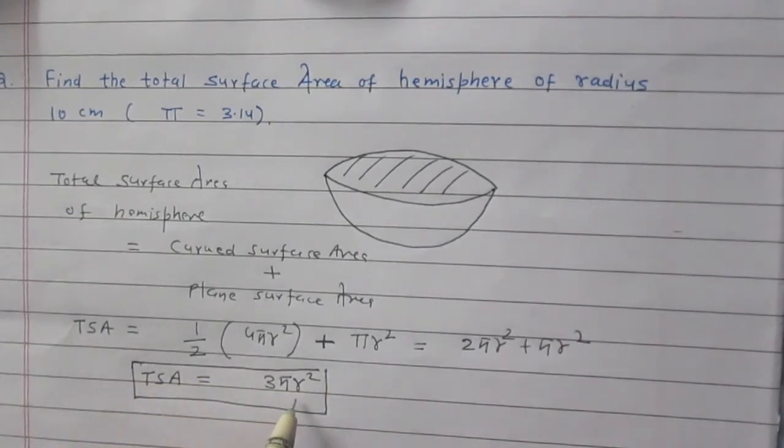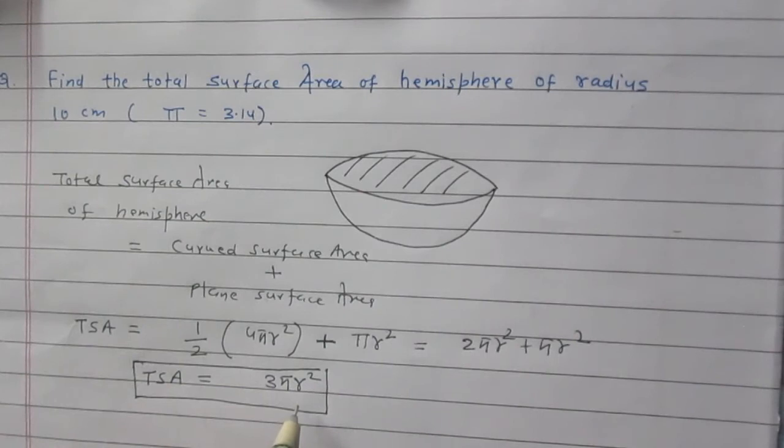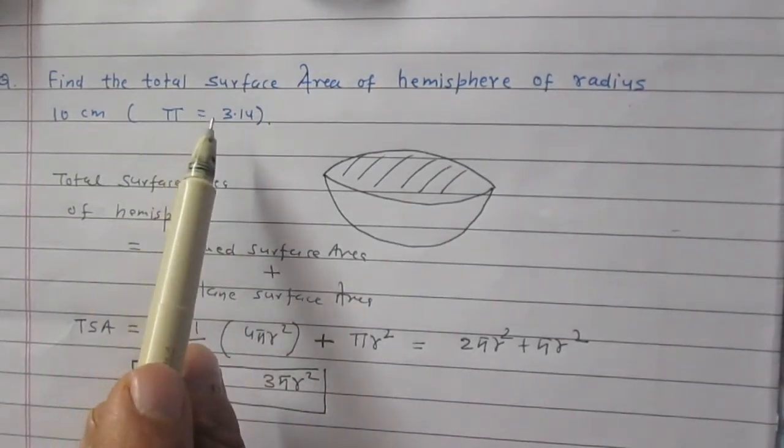where r stands for the radius of the hemisphere. In this question, we are given that the value of π is 3.14.